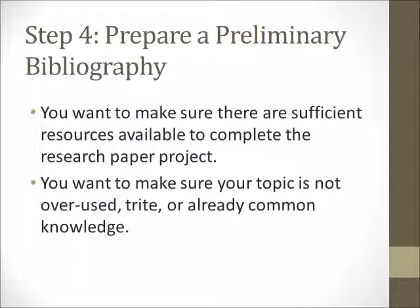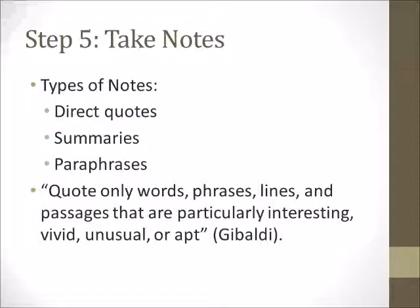Step number four: you want to prepare a preliminary bibliography. At this point, you just want to make sure there are sufficient resources available to complete the research project in a timely manner. You also want to pay attention to topics that give you over a million hits in Google, because that likely means the topic is overused, trite, or already common knowledge. A preliminary bibliography lets you know there is an adequate amount of research available without the topic being overused.